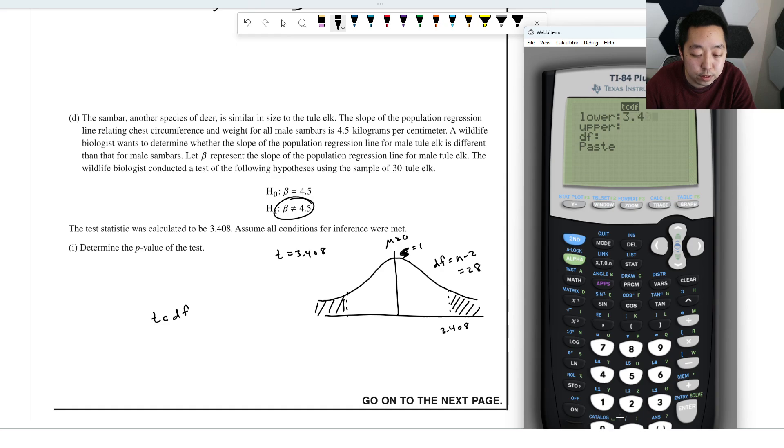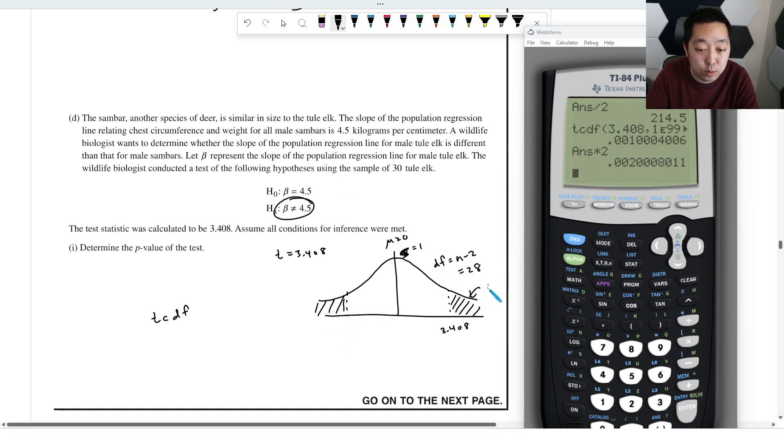So 3.408. Upper is 1E99 or just a huge number. And the degrees of freedom is 28. Now you're going to get that value, that's the area just to the right here. And then you're going to double that. So you can note that this area was 0.001. And so the total area, the p value is 0.002.